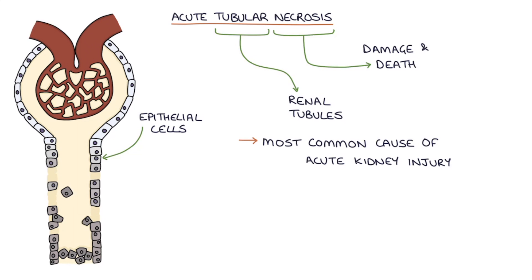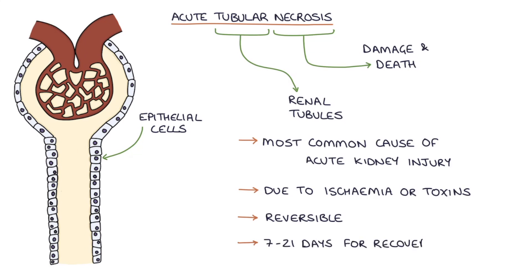Damage to the kidney cells occurs due to ischemia or due to toxins. The epithelial cells have the ability to regenerate, which means that acute tubular necrosis is reversible. And it usually takes 7 to 21 days to make a full recovery.